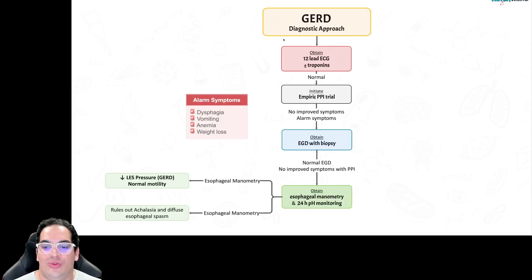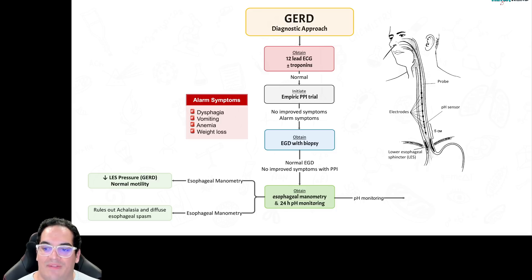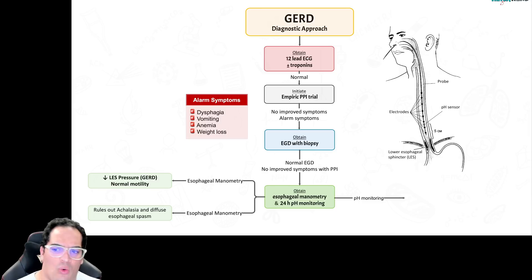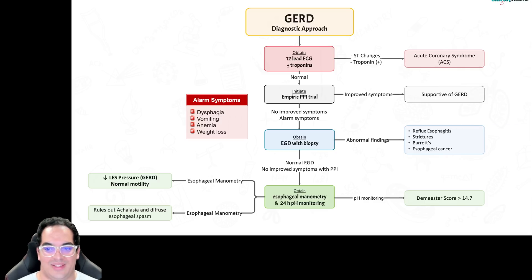With pH monitoring, a probe with pH sensors is extended throughout the esophagus. If acid from the stomach comes up, the sensor detects a pH drop — from 7 down to about 4 — and records an event. These events are calculated into a DeMeester score; if that score is greater than 14.7, it's highly suggestive of GERD.